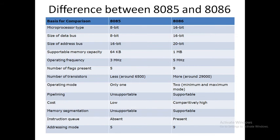Microprocessor type: 8085 is 8-bit whereas 8086 is 16-bit. Size of data bus: 8-bit in 8085 and 16-bit in 8086. Size of address bus: in 8085 address bus is 16-bit whereas 8086 address bus is 20-bit. Supportable memory capacity: only 64 KB in 8085 whereas in 8086 it is 1 MB.